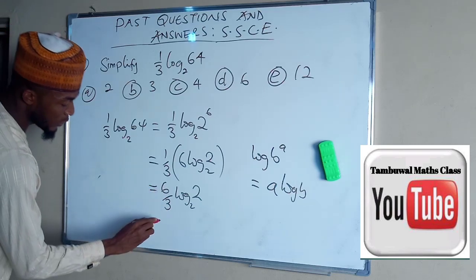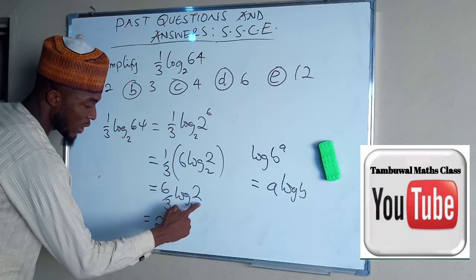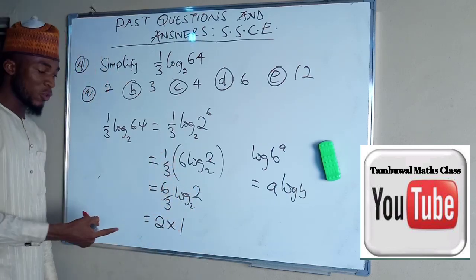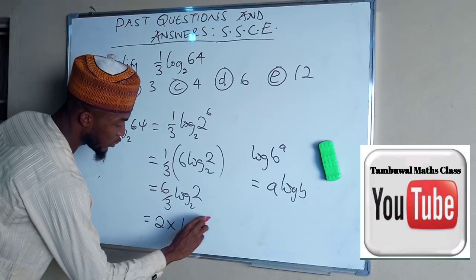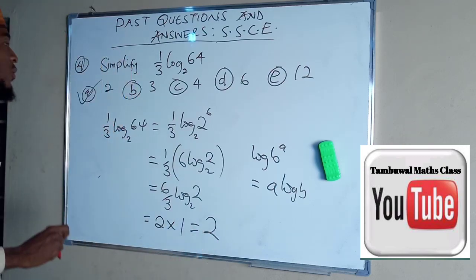So we have 6 divided by 3, which is 2, times 1, because the log of a number having the same base as the number is 1. So this is equal to 2. So this is the first option, A, which is the correct answer.